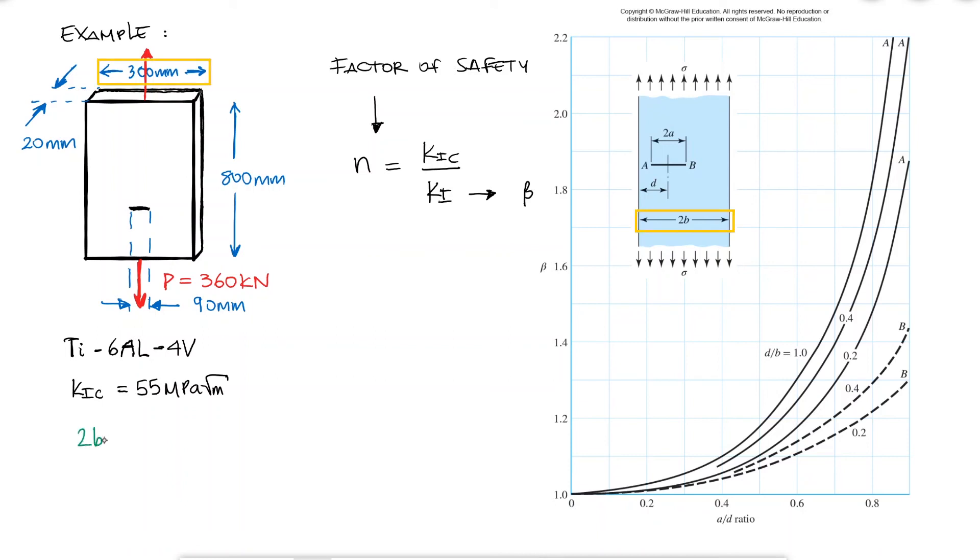For the modification factor, I know that 2b is equal to 300 millimeters, that since the crack is centered, the distance d would be half of that, making d over b equal to 1, and that the crack that is 90 millimeters would make a equal to 45 millimeters.